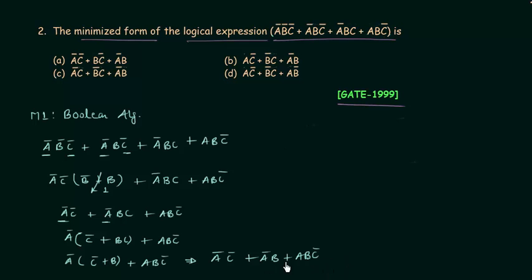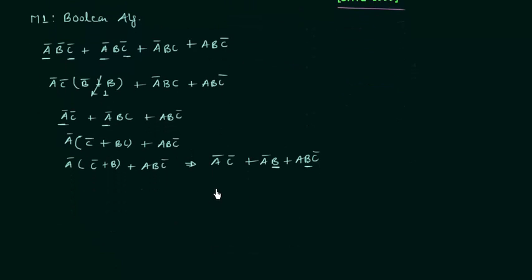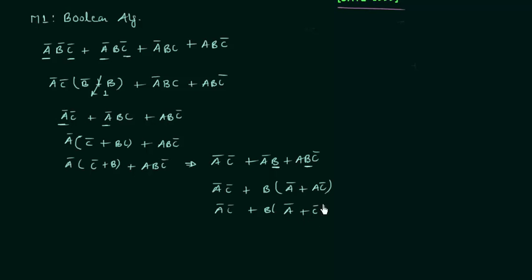From the last two terms A'B and ABC', we take B as common. In the bracket we have A' or AC'. Using the distributive law, A' or AC' equals A' or C'. So we have A'C' or B(A' or C'), which simplifies to A'C' or A'B or BC'.